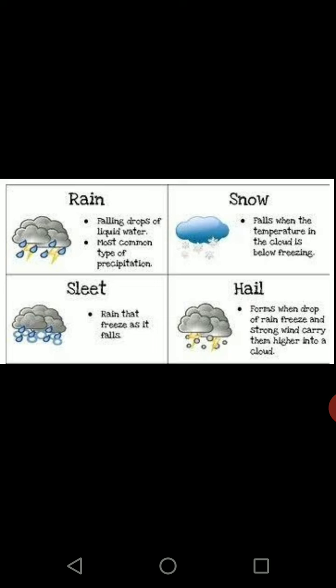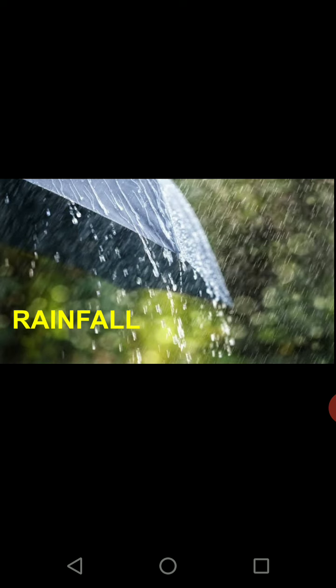We will study four main forms of precipitation. Rainfall: falling drops of liquid water, the most common type of precipitation. Snowfall: falls when the temperature in the cloud is below freezing. Sleet: rain that freezes as it falls — the water droplets freeze on the way down. Hailstorms: form when drops of rain freeze and strong winds carry them higher into the cloud. These are very strong and destructive.